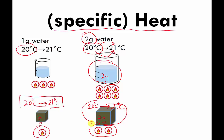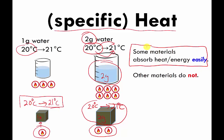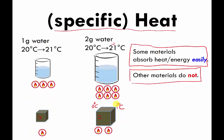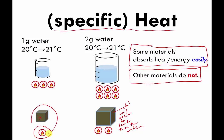There are a couple of punchlines here. The first is that some materials absorb heat easily and others not so easily. Looking at the examples: which material was easier to heat up — the water or the metal? The answer is the metal, because it only took one candle's worth of energy to raise its temperature by one degree, whereas it took three times as much energy to raise the temperature of the water.